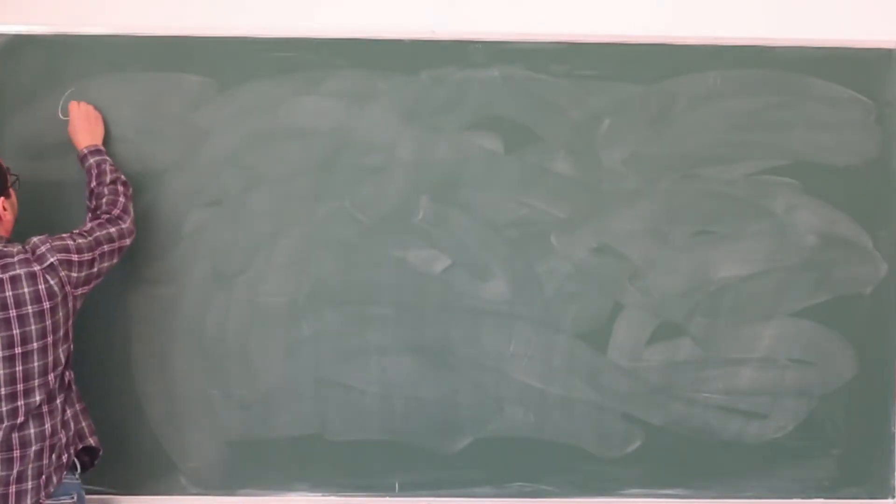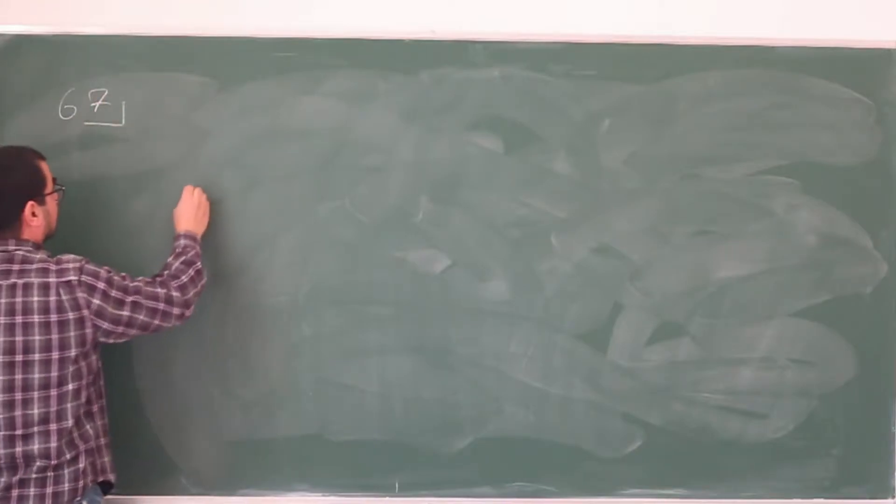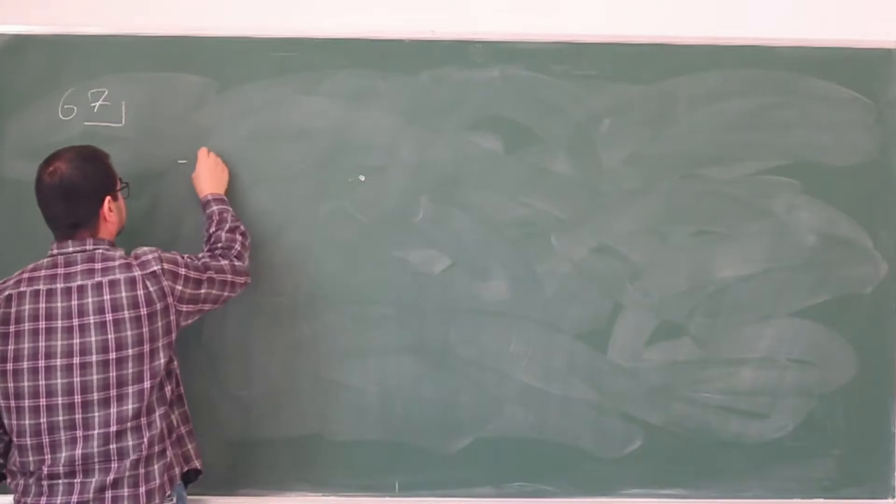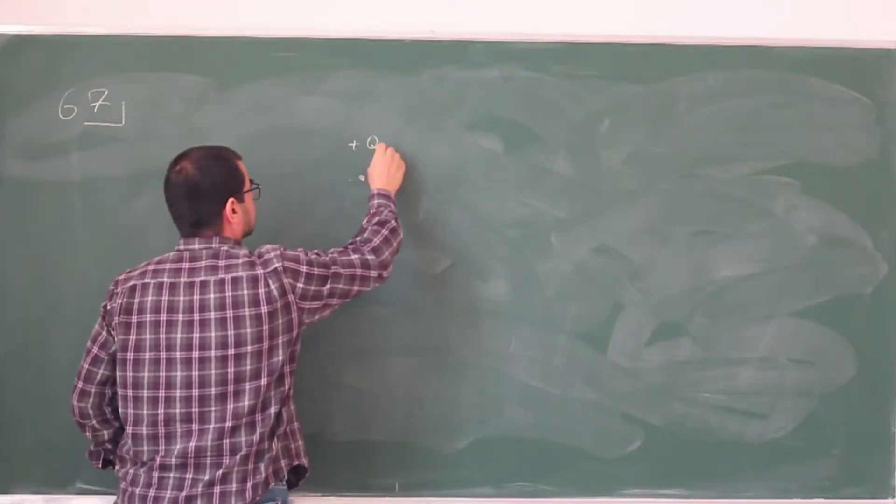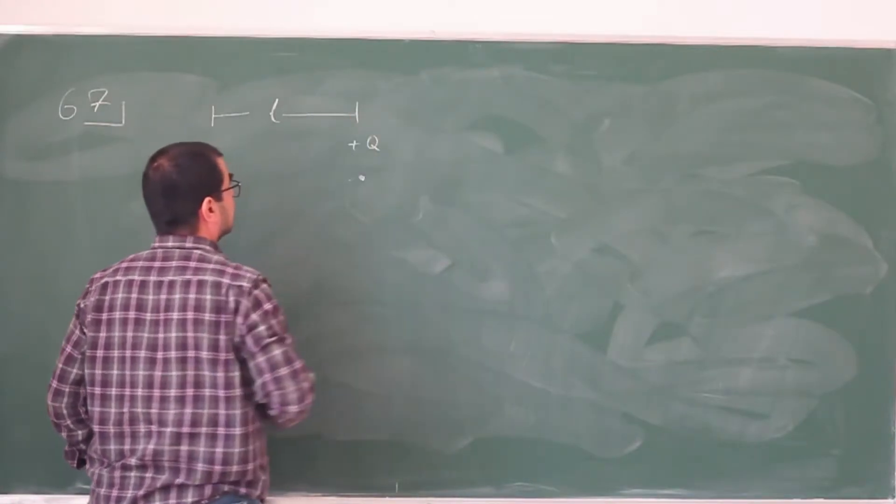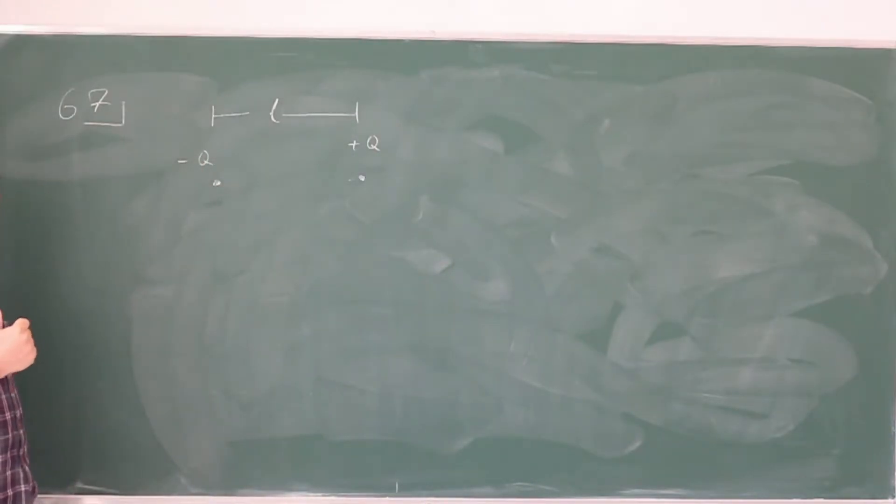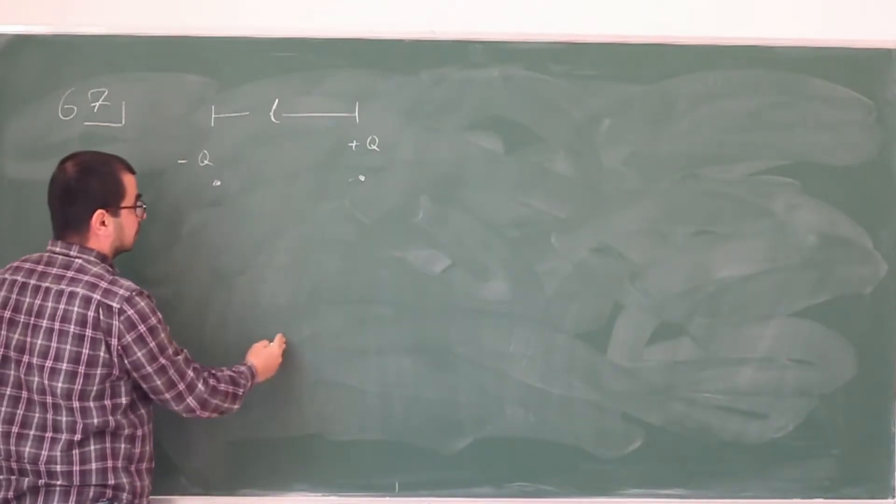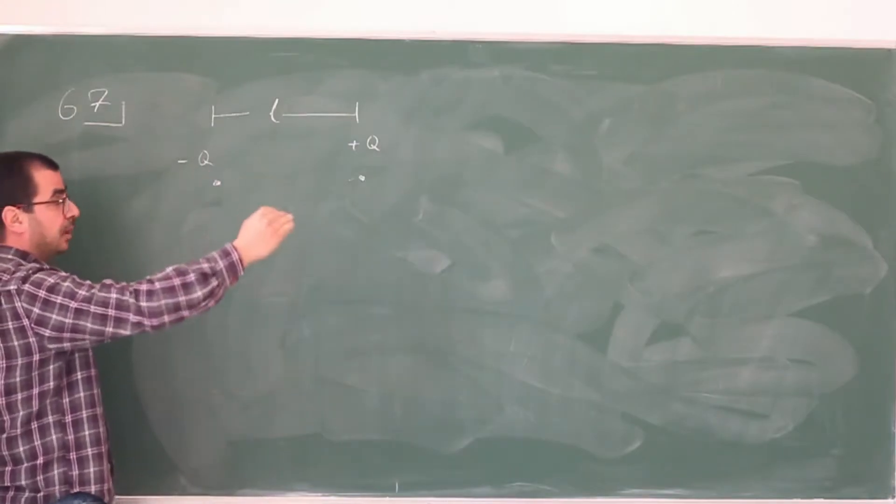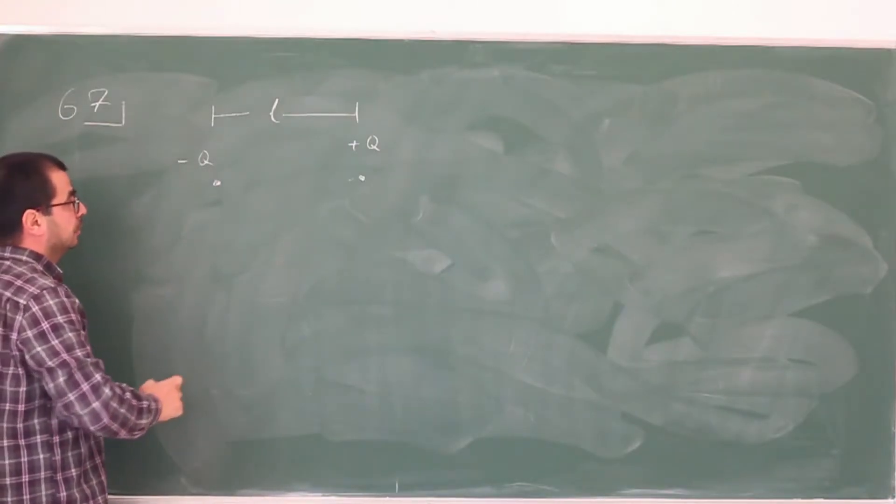So let's say that I have two charges, minus q here, some plus q here that's separated by some distance L. And in the text, they are calculating the electric field of a dipole that's perpendicular to the dipole moment. Now here they're asking for the electric field at the far point that's along the dipole moment.